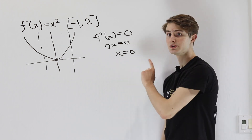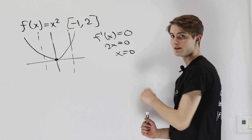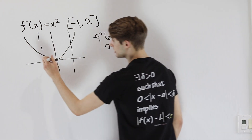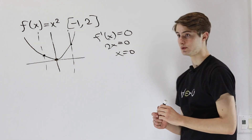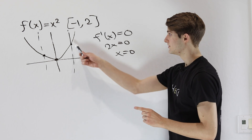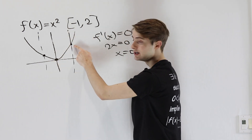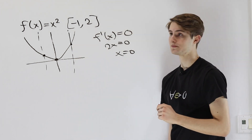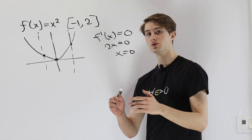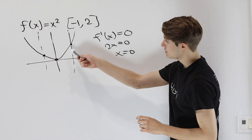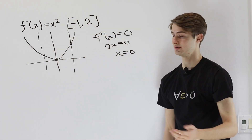That only happens in places where the derivative is equal to 0. The only other thing we have to check, after we have the critical points, are the boundaries — these points negative 1 and 2. The reason those are important is because even though the derivative is not 0 there, the function could have been increasing up to that bound. Even though the values are bigger on the outside of that boundary, that doesn't matter because we're only looking inside the boundary. So we have to check those bounds in case the function has been increasing even though the derivative isn't 0.